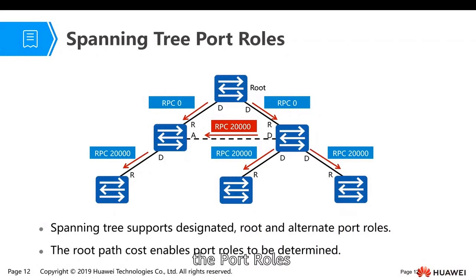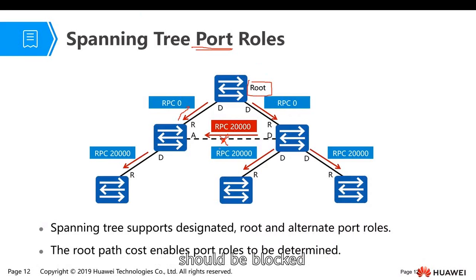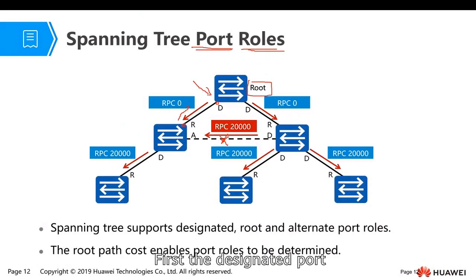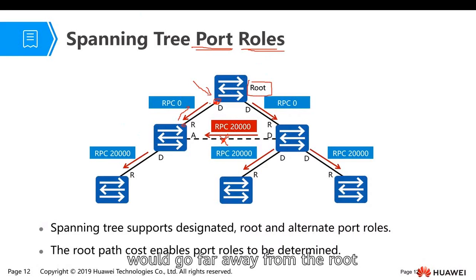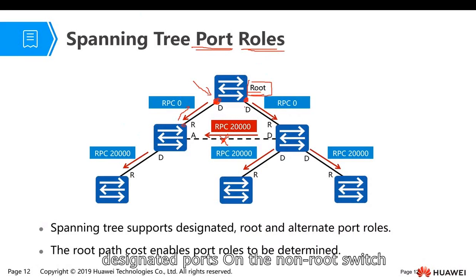The port lowers, then first choose the root, then calculate the best path. If the same path is not the best path, that path should be blocked. Each port on the switch gets the lowest first — the designated port. The designated port goes far away from the root. On the root switch, all ports leave the root, so all ports should be designated ports.